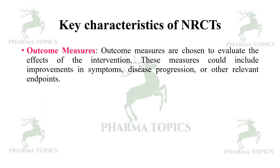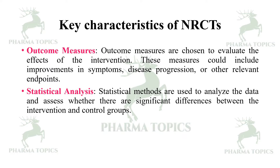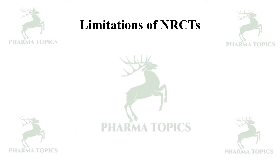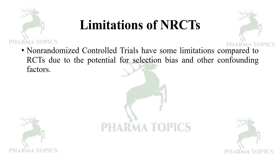These outcome measures could include improvements in symptoms, disease progression, or other relevant endpoints. Statistical methods are used to analyze the data and assess whether there are significant differences between the intervention and the control groups. Ethical principles, including obtaining informed consent from participants and prioritizing their safety, are followed throughout the trial.